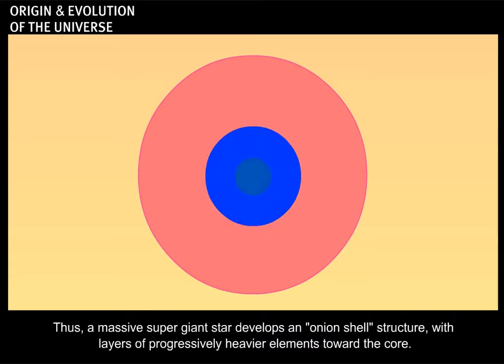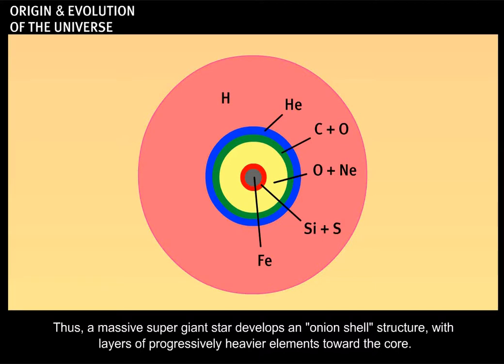Thus, a massive supergiant star develops an onion shell structure, with layers of progressively heavier elements toward the core.